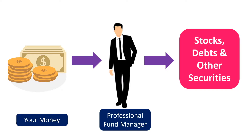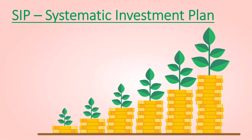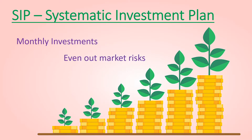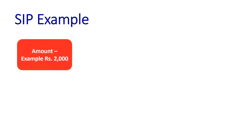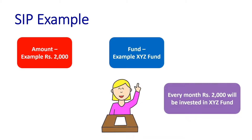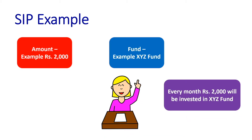The other term associated with mutual funds that we keep hearing is SIP — Systematic Investment Plan. SIP helps to invest in mutual funds periodically, for example monthly. Instead of a lump sum amount, this will help to even out the market risk. You can choose an amount and fund, and every month, say Rs. 2000 will be invested in XYZ fund.